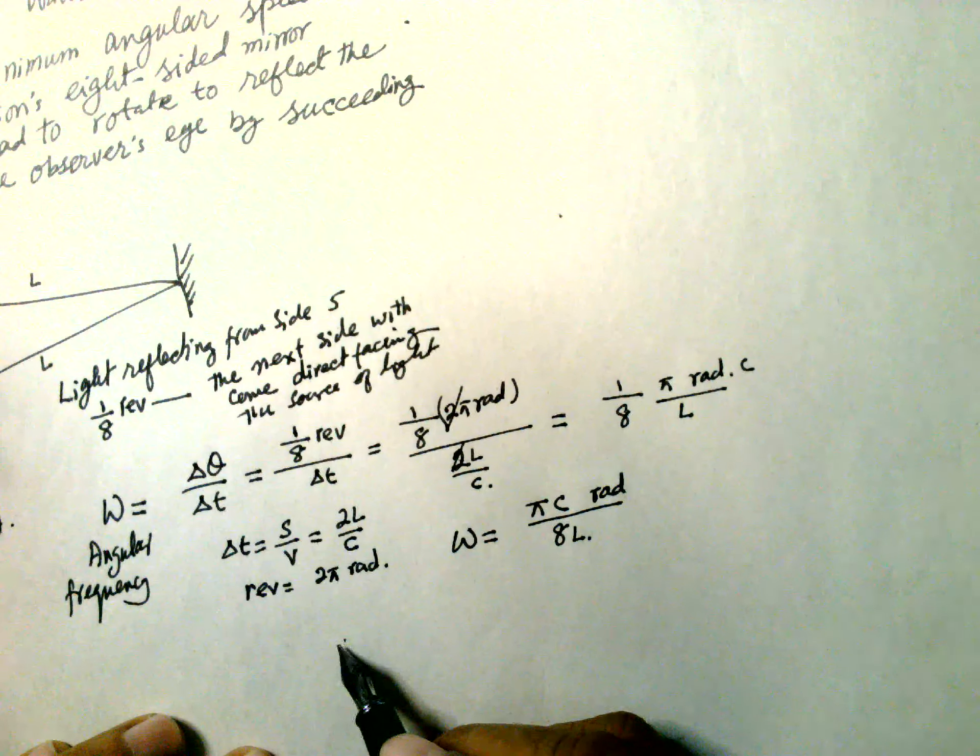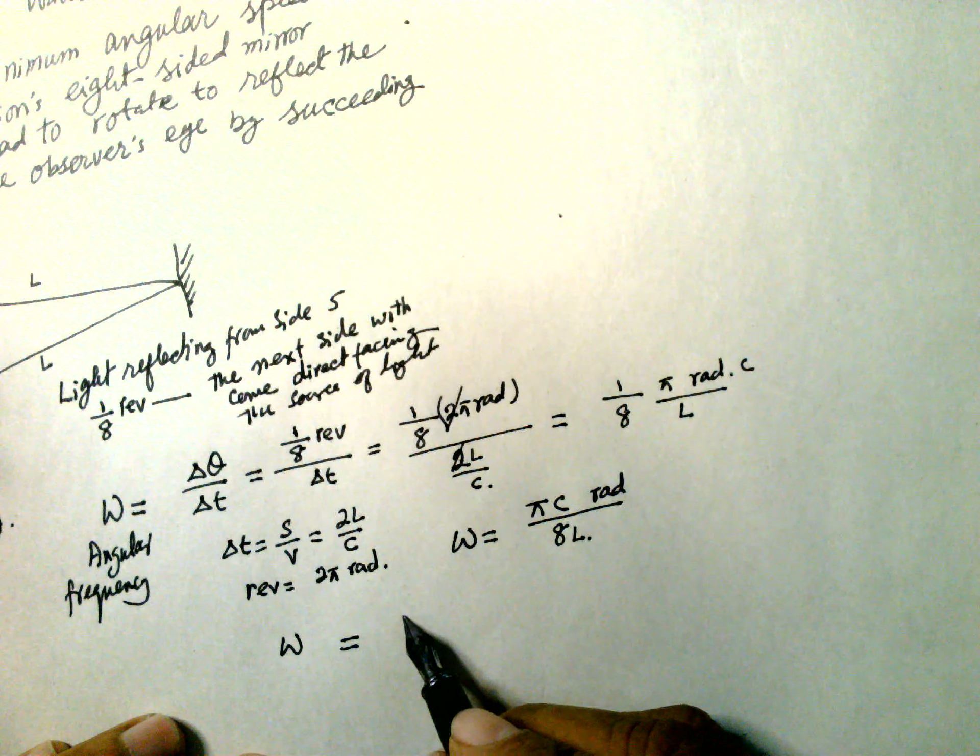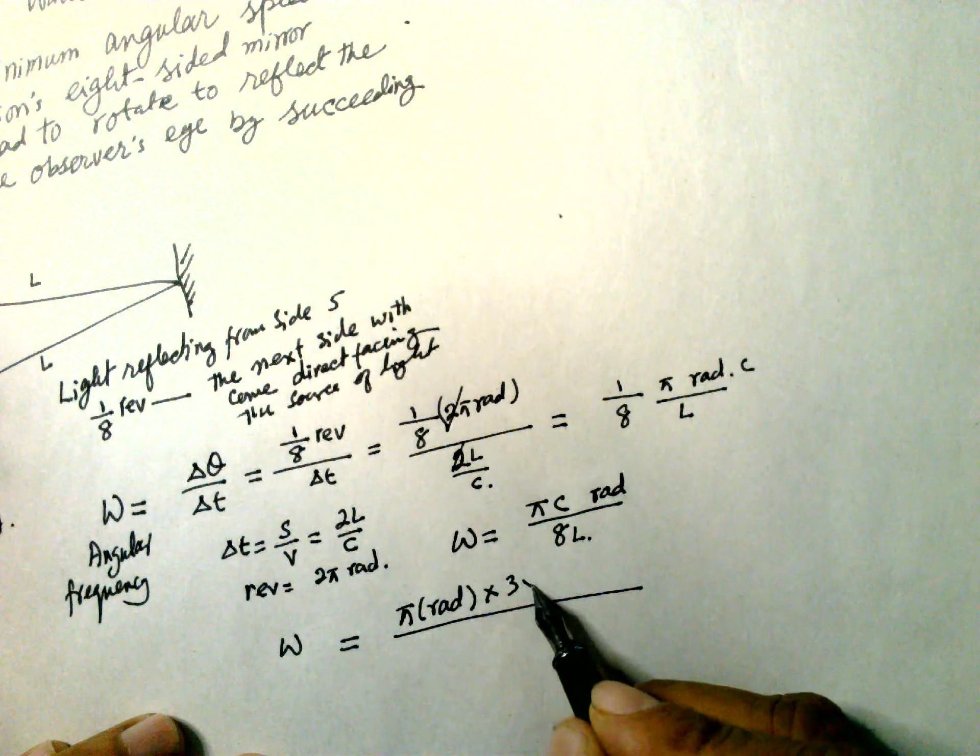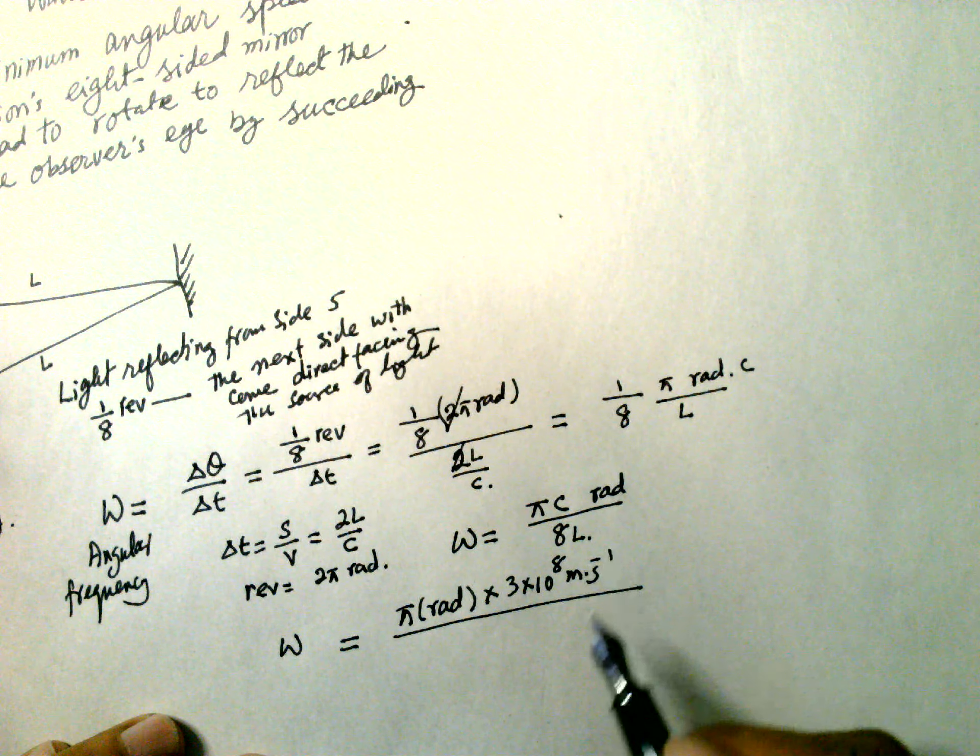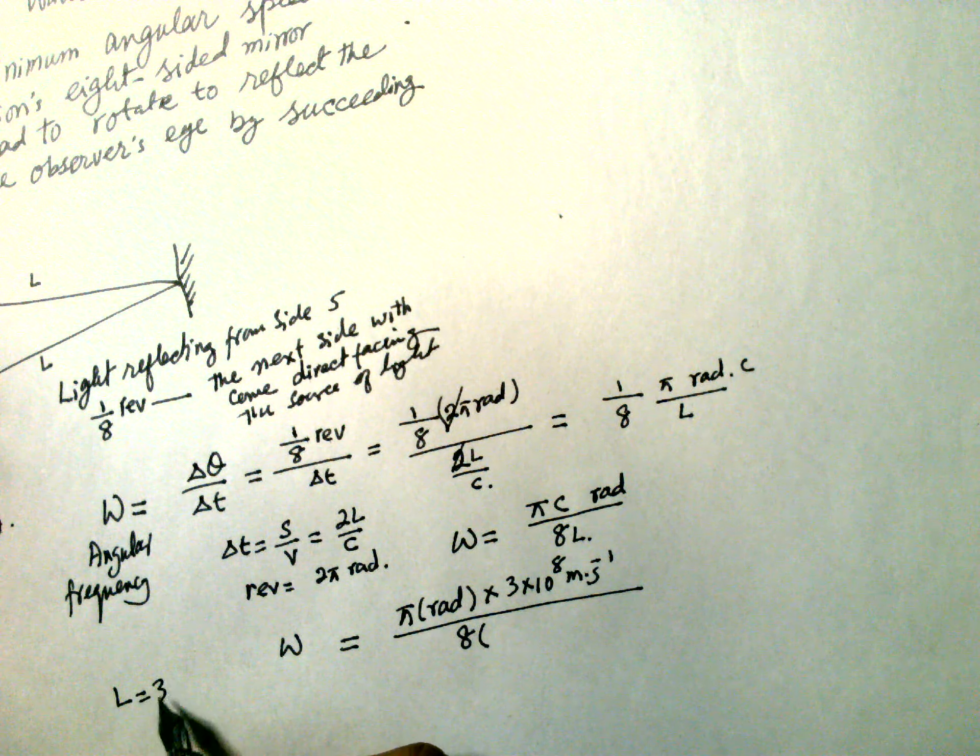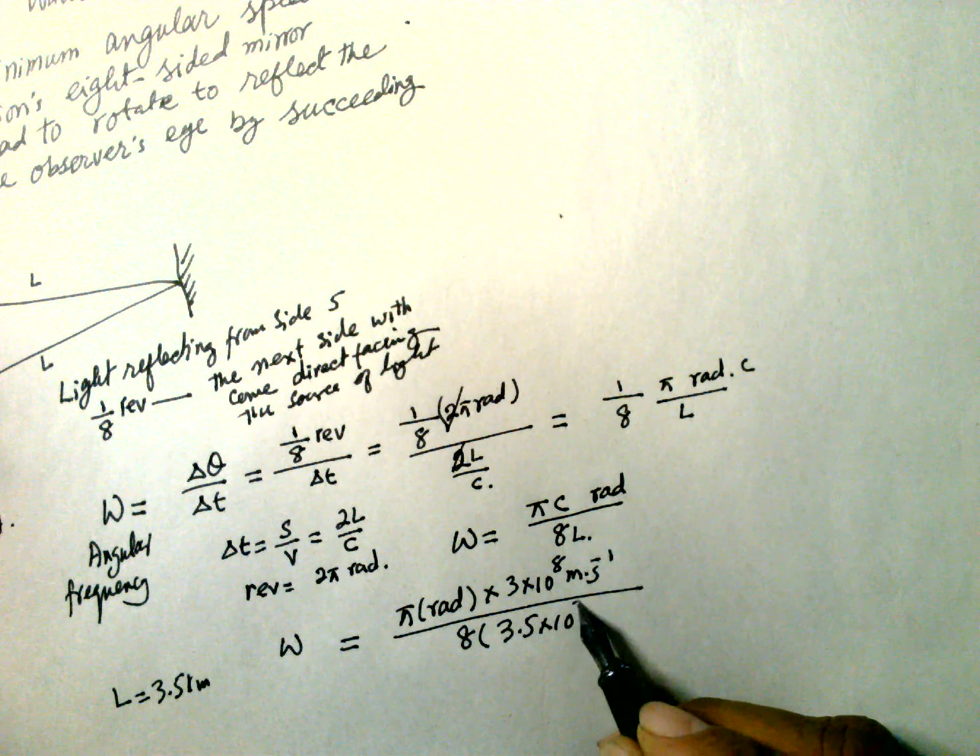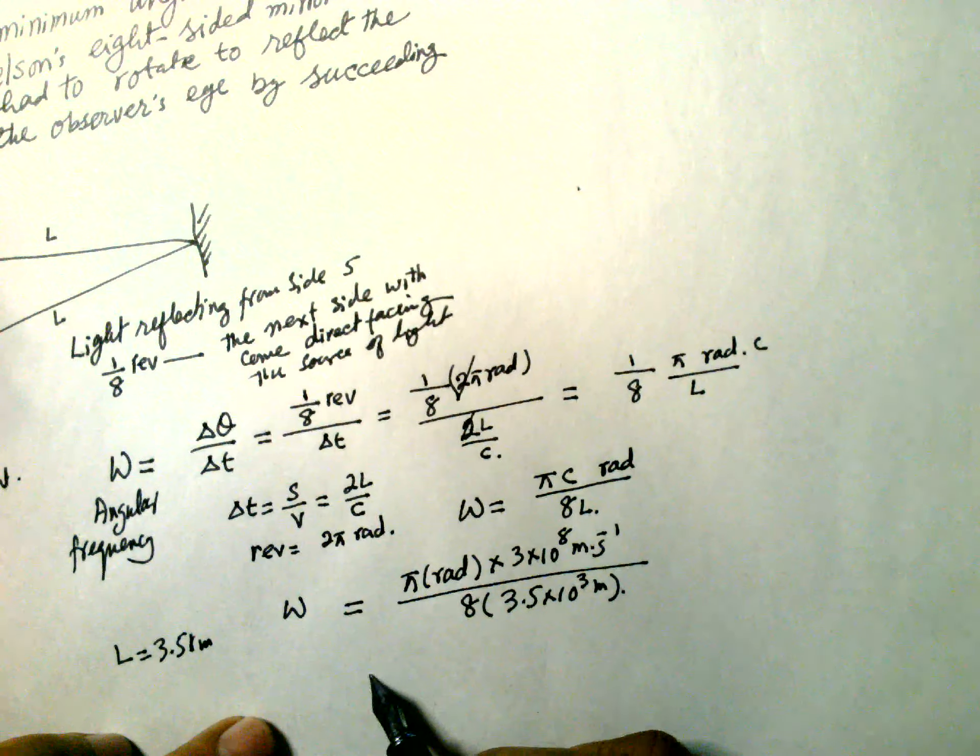If you substitute the values, omega is equal to π radian into c, 3×10^8 meter per second, divided by 8, and L is equal to 3.5 kilometer, 3.5×10^3 meter. And this answer is equal to...